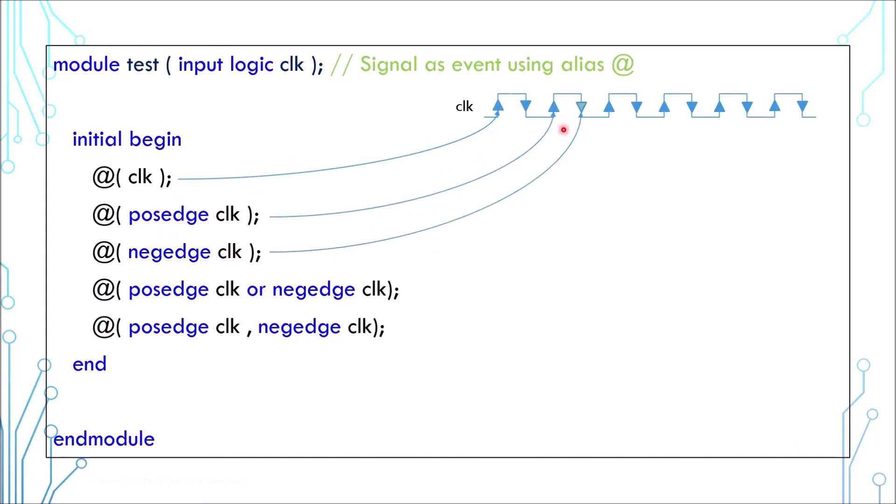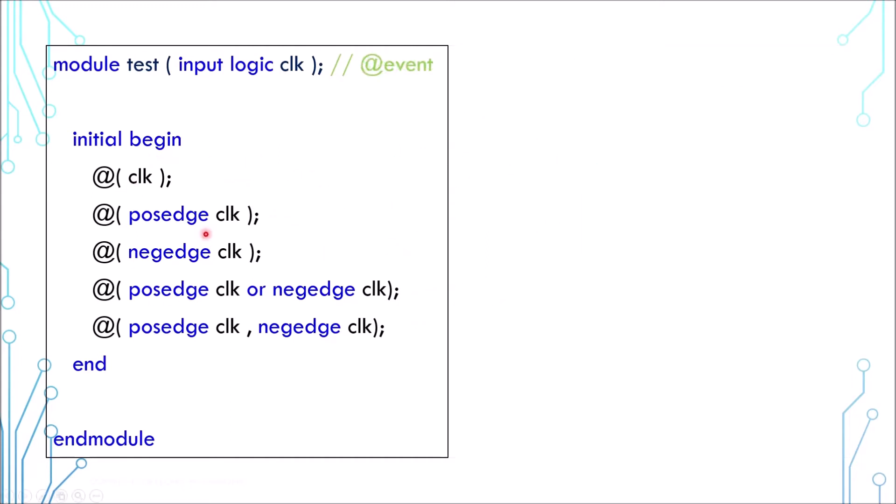And the next one waits for a negative edge. And the next one waits for either a positive edge or a negative edge, which is the same as the last one. I believe the example here is easy to understand.